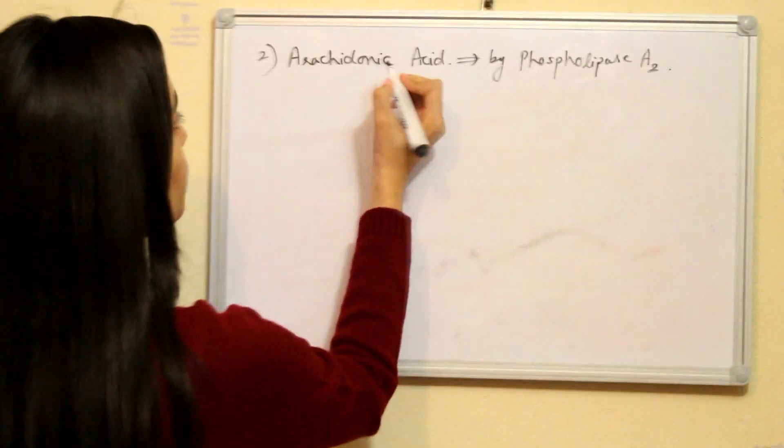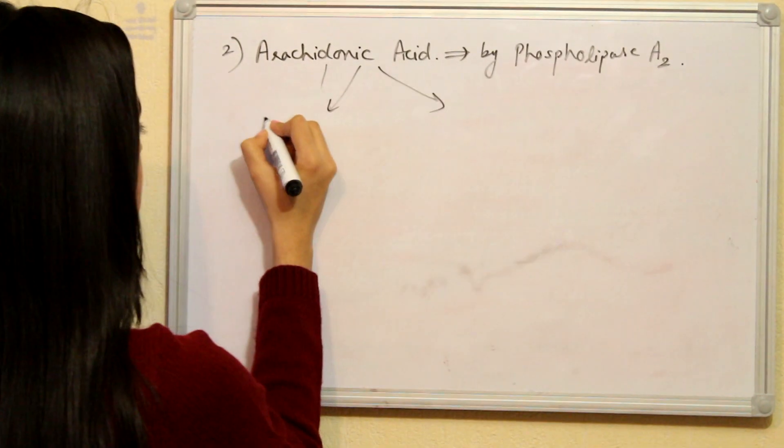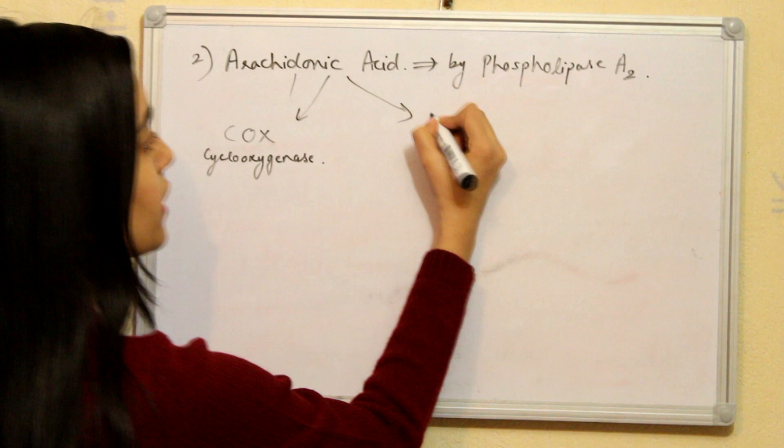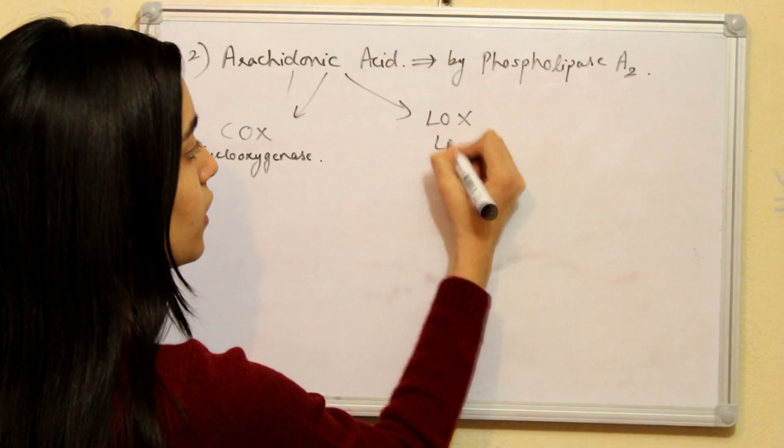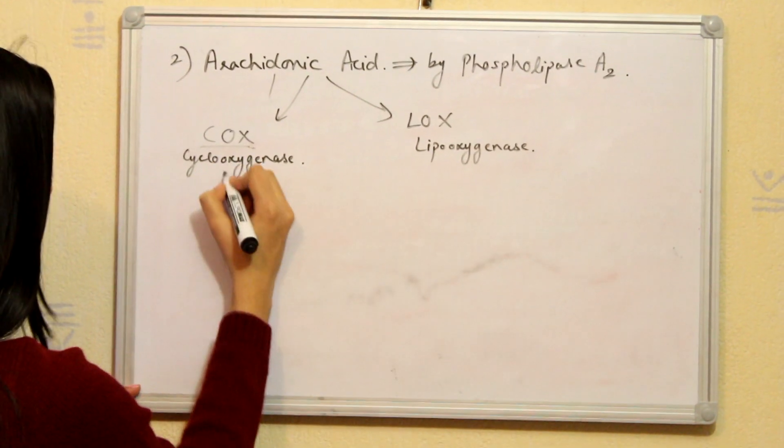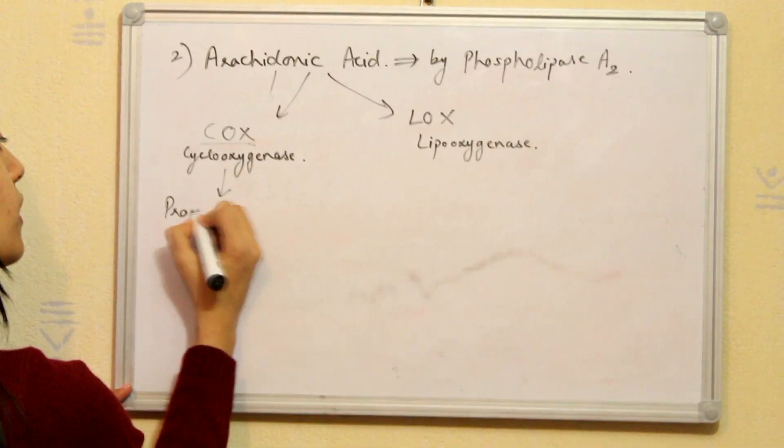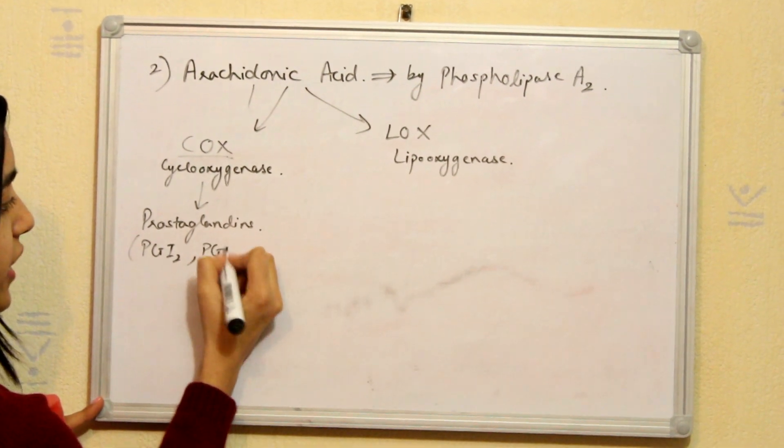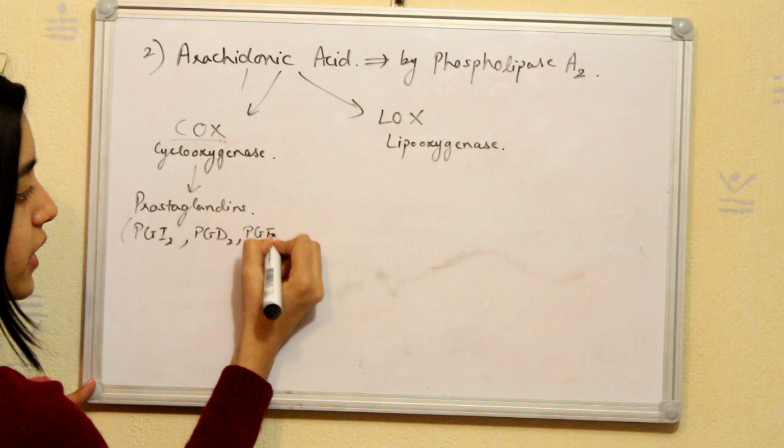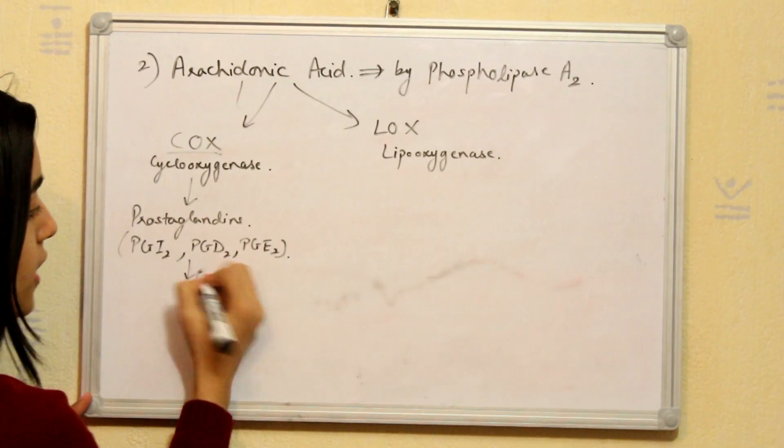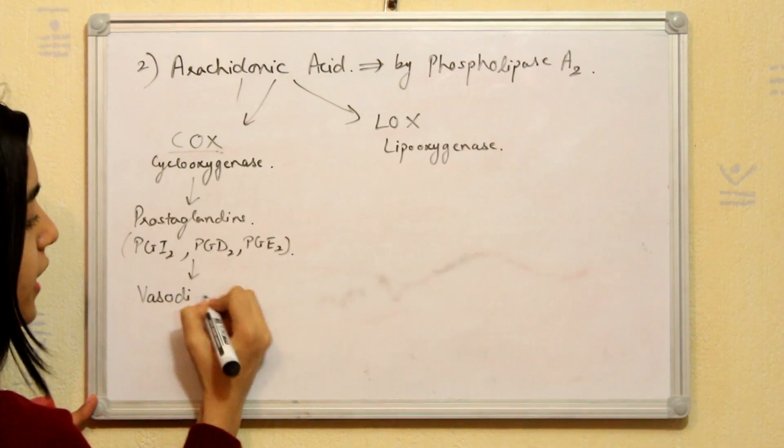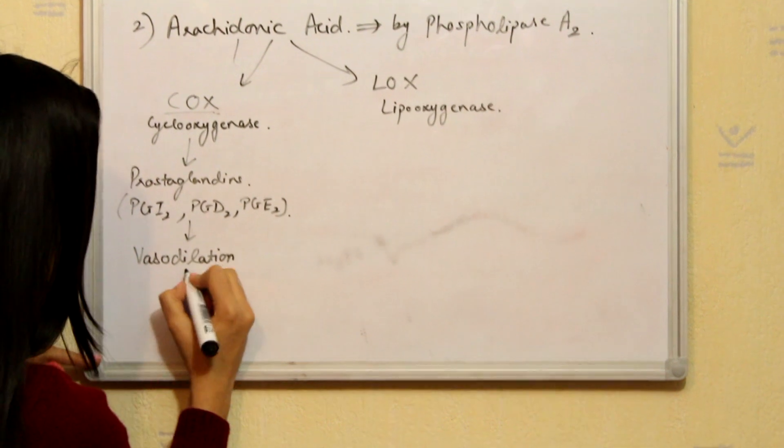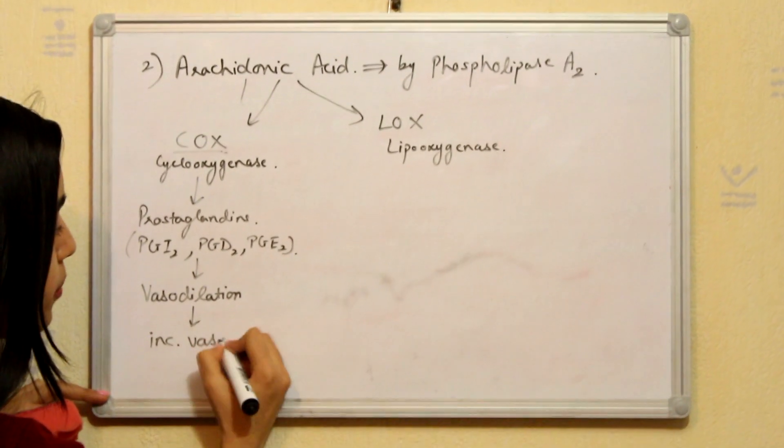So arachidonic acid works by two pathways. First is COX which is called cyclooxygenase. And second is LOX, lipoxygenase. This COX enzyme produces prostaglandins particularly PGI2, PGD2 and PGE2. These prostaglandins result in vasodilation. Vasodilation is a dilation of the blood vessels. So when the blood vessels are dilated it will increase the vascular permeability.